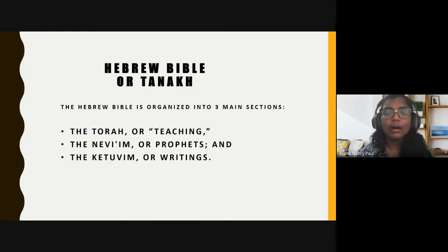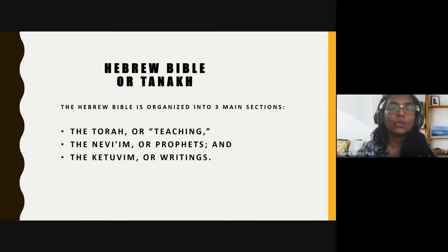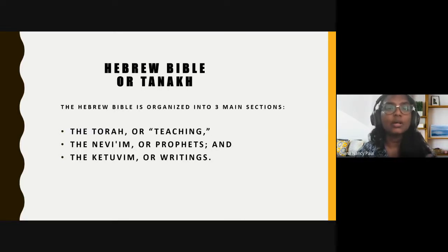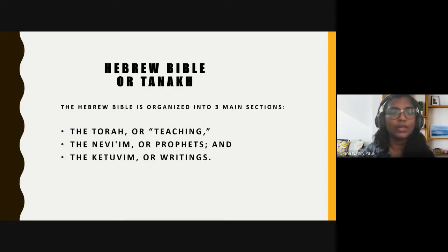Or the later prophets, which exhort Israel to return to God and are named because they are attributed to or contain stories about them — for Isaiah, Jeremiah, Ezekiel — and together in one book known as the Book of the Twelve, the 12 minor prophets: Hosea, Joel, Amos, Obadiah, Jonah, Micah, Nahum, Habakkuk, Zephaniah, Haggai, Zechariah, and Malachi, the last book of the Old Testament.